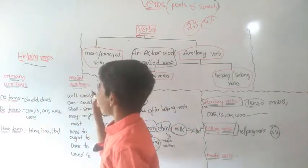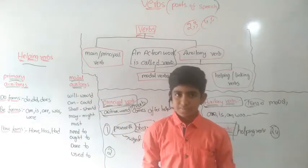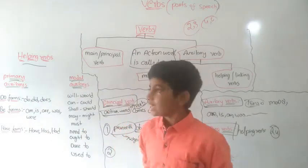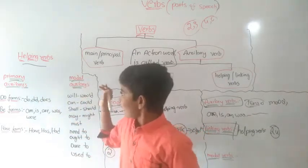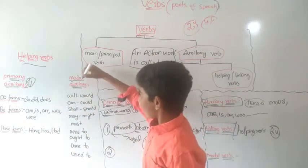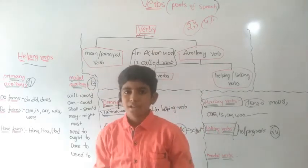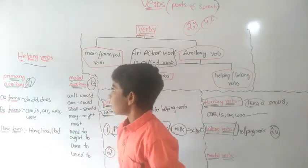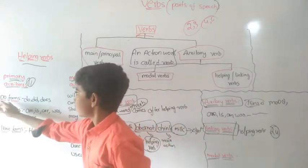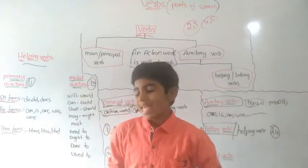The 24 helping verbs are divided into two types: primary auxiliaries and modal auxiliaries. In primary auxiliaries, there are three forms: Do forms, Be forms, and Have forms.